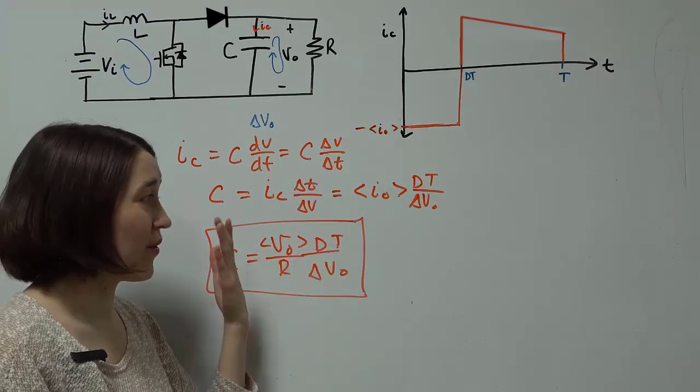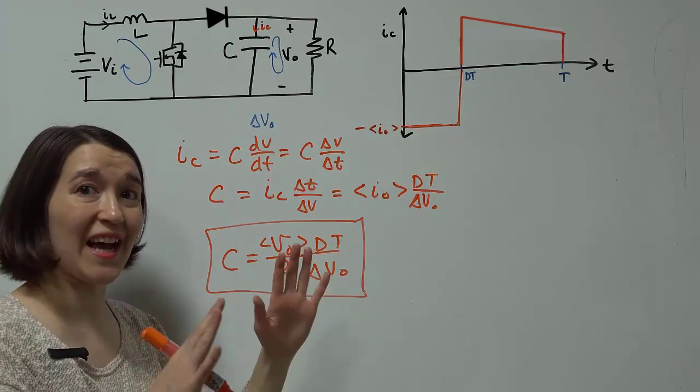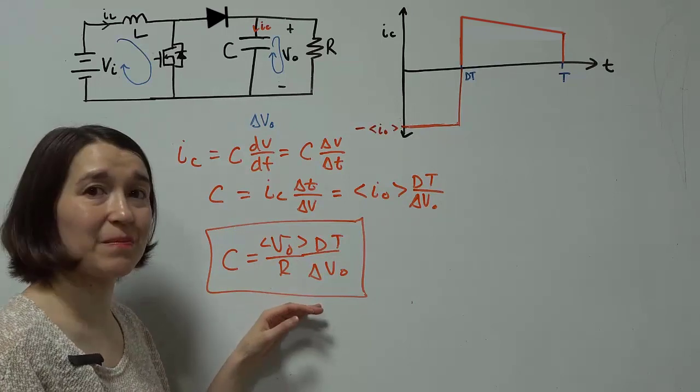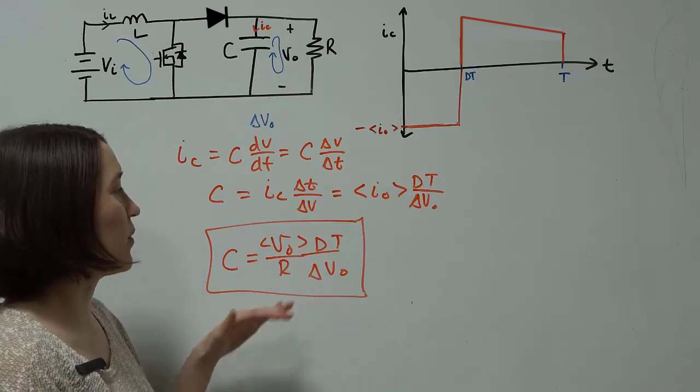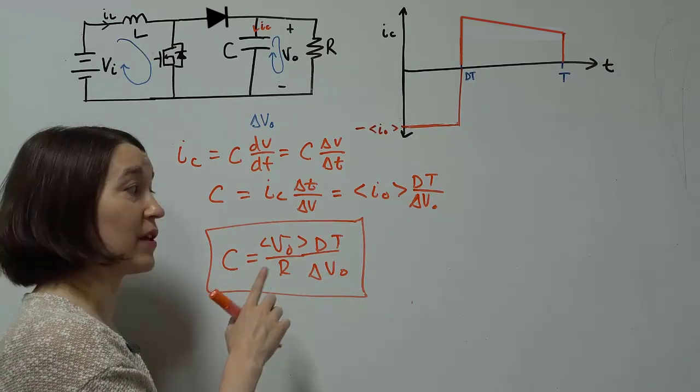And it depends on your output current, which is your output voltage divided by your resistor, and DT. So there's no charge hat here, it's just a straight calculation. And this will help you give you the value for the capacitor that you want.